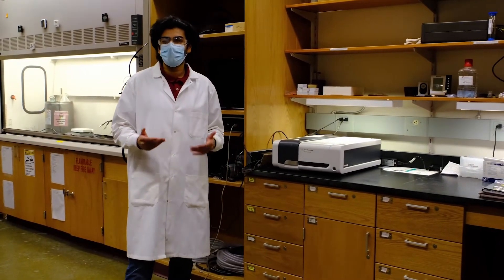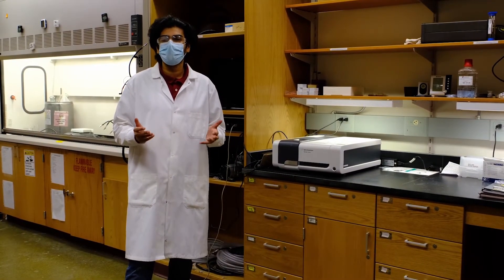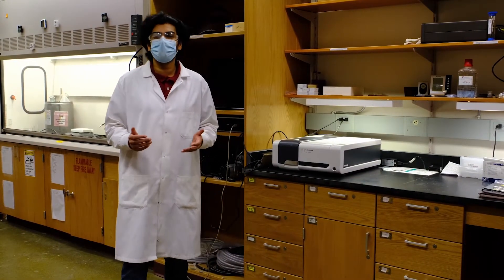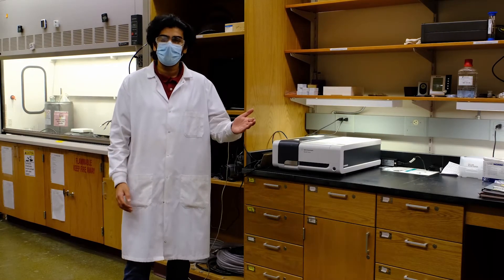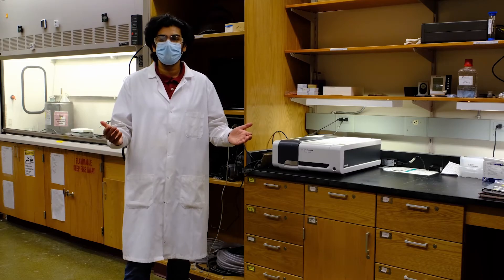This apparatus is a UV vis spectrometer and is one of the most commonly used machines in our lab as it determines the absorption spectra of solution and film samples from the ultraviolet to the visible wavelength regions of the spectrum.